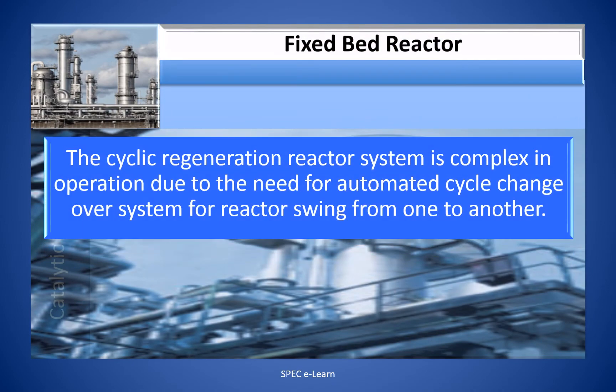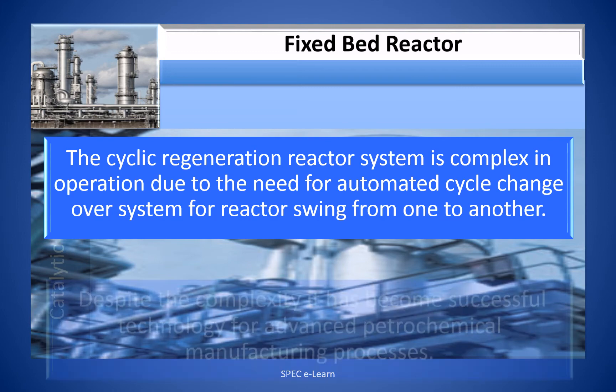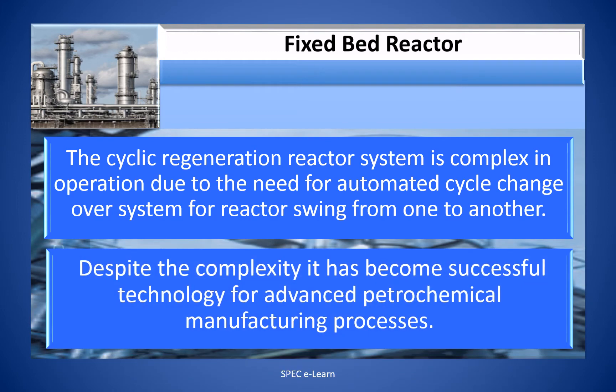The cyclic regeneration reactor system is complex in operation due to the need for an automated cycle changeover system for reactor swing from one to another. Despite the complexity, it has become a successful technology for advanced petrochemical manufacturing processes.